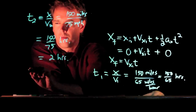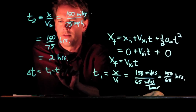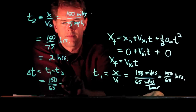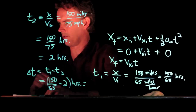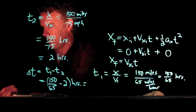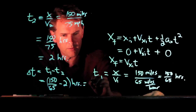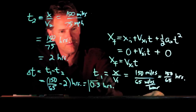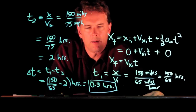And now what we want is, what's the difference? What is delta t? How much time do you really save? So that's just t1 minus t2. We can plug this into our calculator and see what we get. So we have 150 divided by 65, which is 2.3. And so when we subtract 2, we get 0.3 hours. You can convert that to minutes or seconds or whatever you like, but that's basically how much time you save.